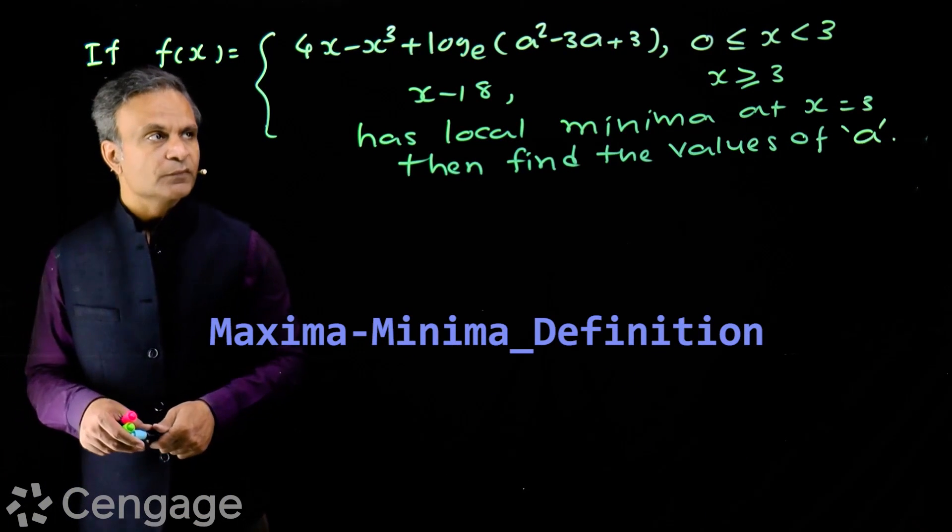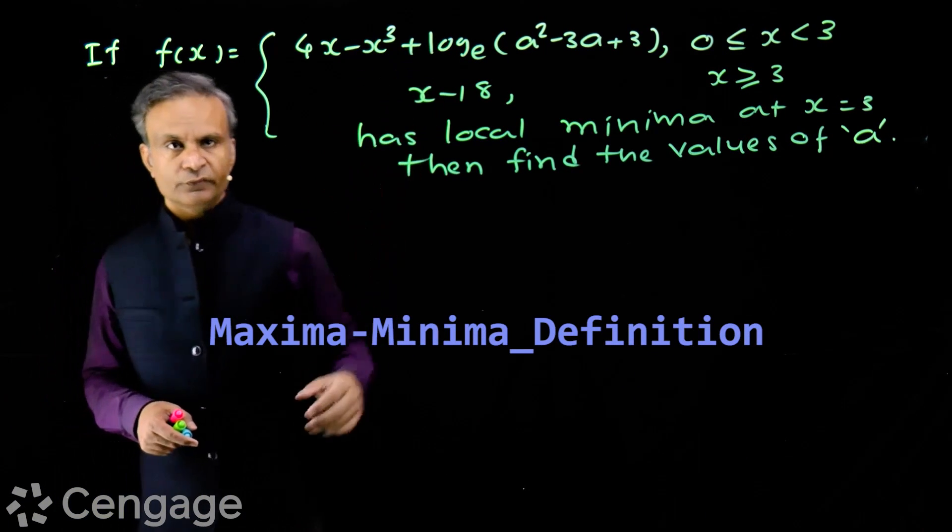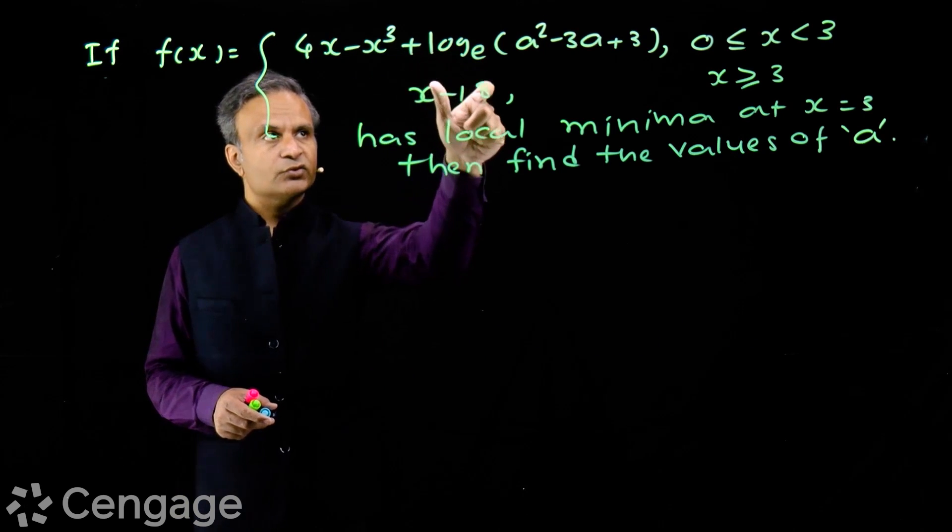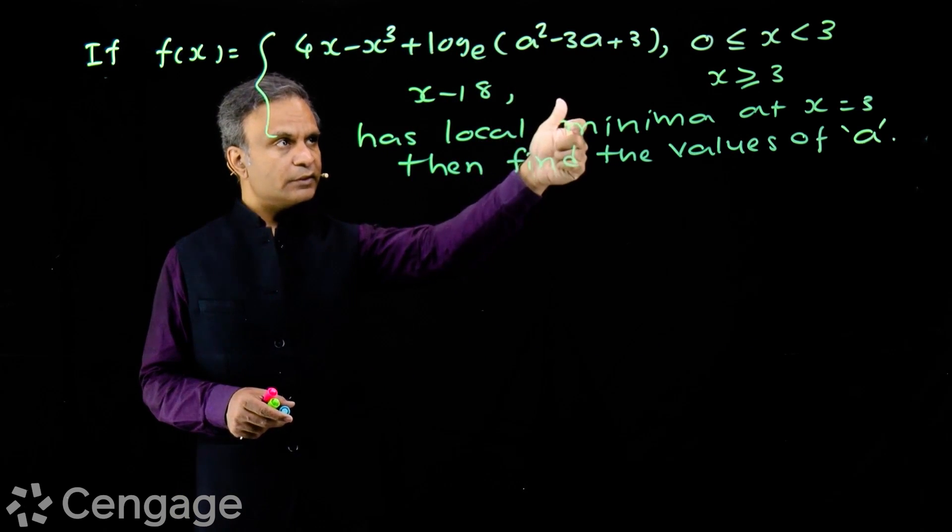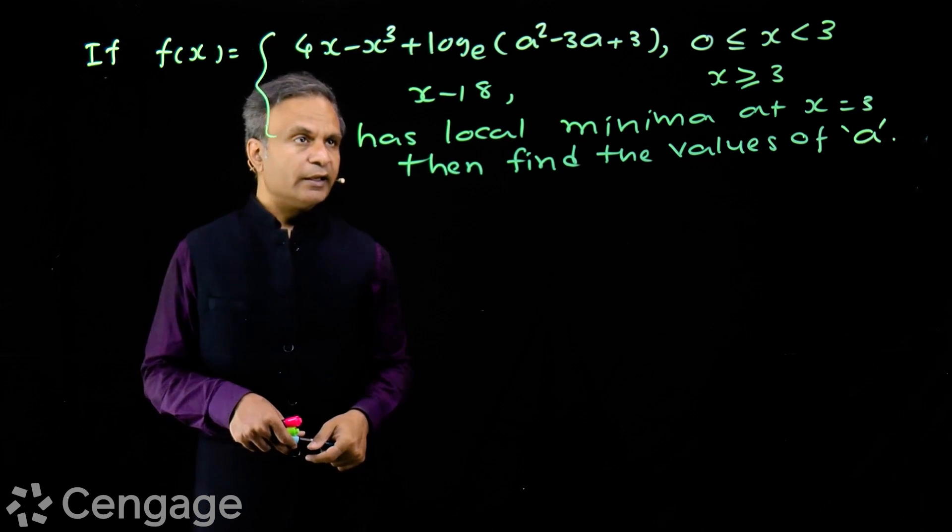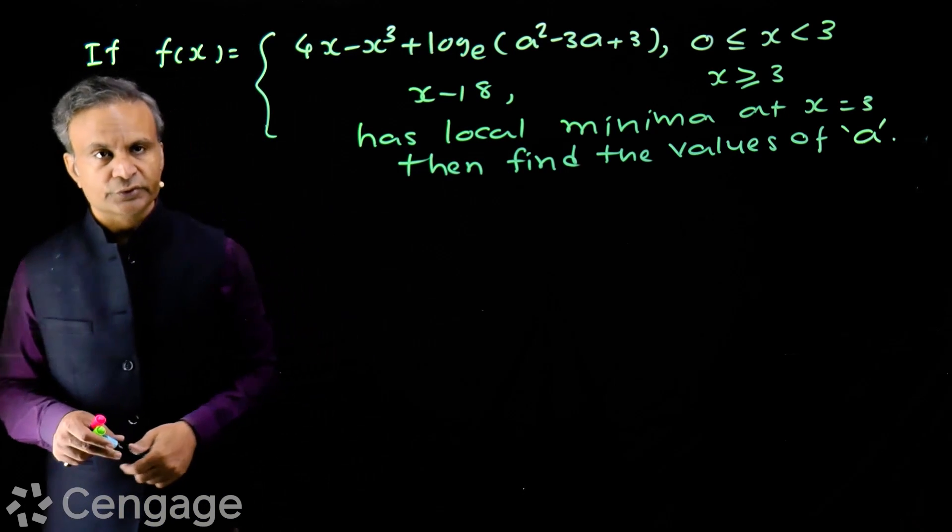We have one more question here. We have a piecewise definition of function. Function f(x) is 4x minus x cube plus log of e square minus 3a plus 3 for 0 less than or equal to x less than 3, and x minus 18 for x greater than or equal to 3.